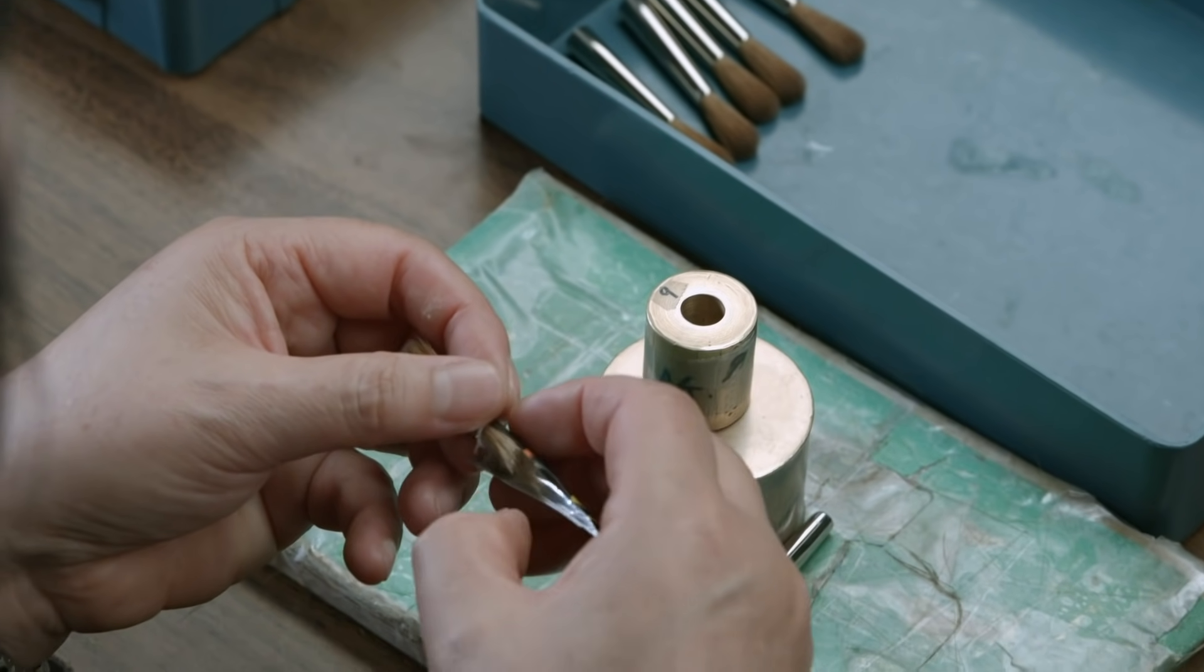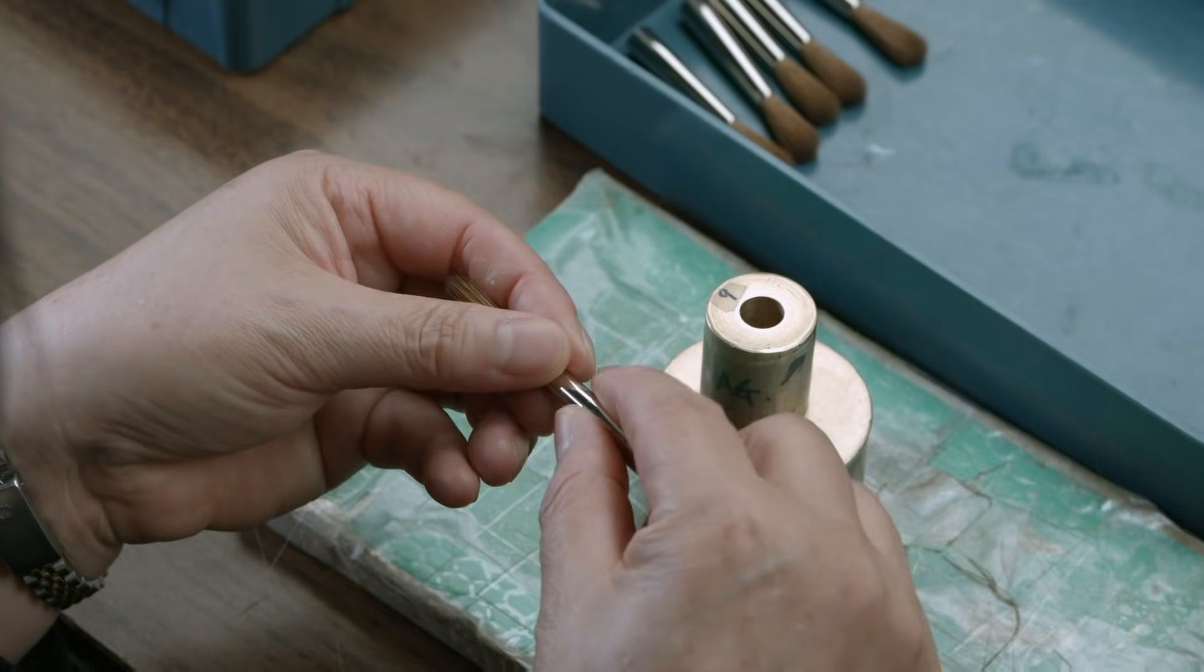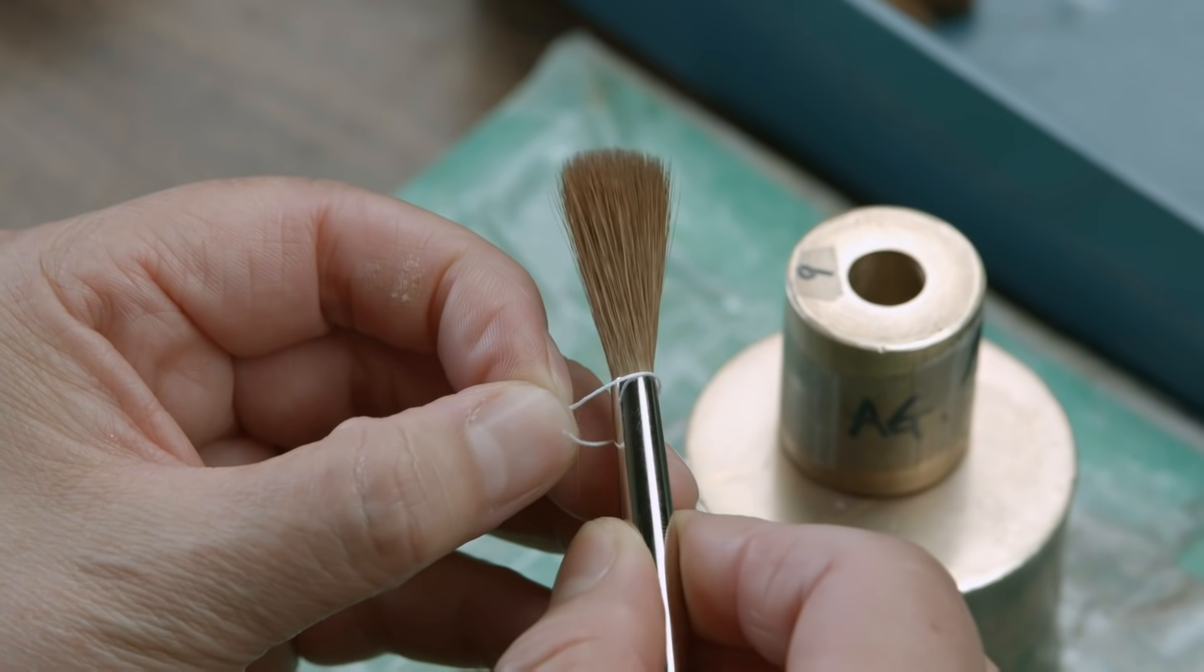The brush head is then inserted back into the ferrule, and the string is removed.